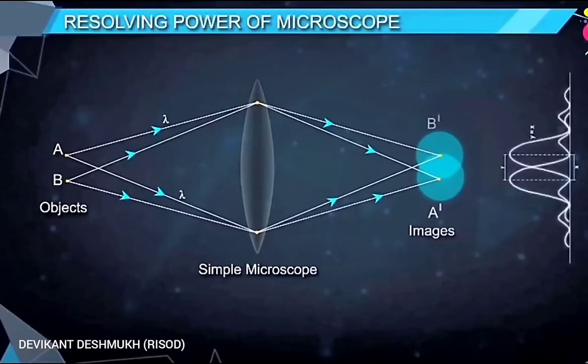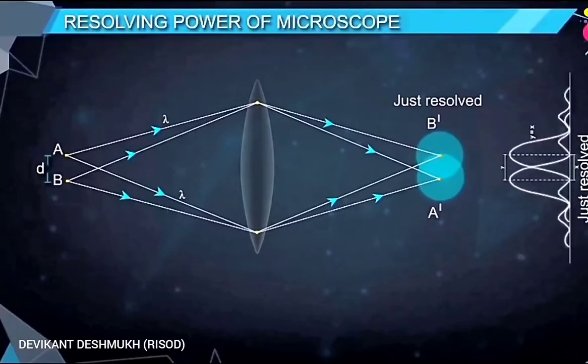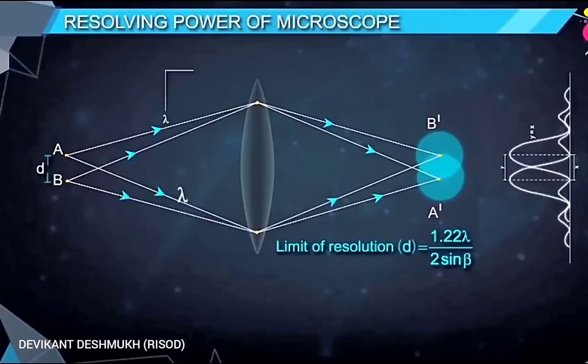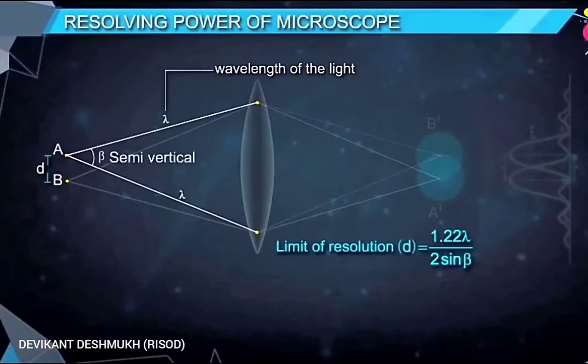If small d is the least distance between A and B for which its image A' and B' are appeared just resolved, then it can be proved that small d is equal to one point two two lambda upon two sine beta. Where lambda is the wavelength of light and beta is the semi vertical angle of cone made by light rays from one of the object and enter into objective of microscope.